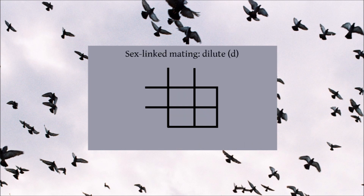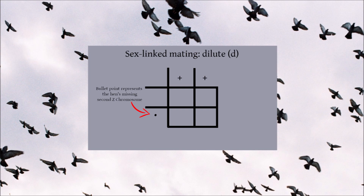Now let's move on to a sex-linked mating. This time we'll use dilute as our example. Dilute is carried on the Z chromosome and is symbolised by a small d. Remember, cocks have two Z chromosomes whereas hens only have one, so hens can only carry one copy of the dilute gene. We draw a Punnett square like normal. The top line is the same as before — let's say the cock is homozygous wild type at the d locus. The hen's side is different: she only has one Z chromosome, so we replace the second with a bullet point. On her only Z chromosome, we'll say she carries dilute, or d.